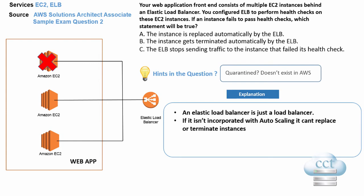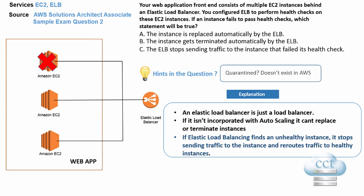So answer A — the instance is replaced automatically by the ELB — no, it can't do it unless there's Auto Scaling, and they do not mention Auto Scaling in the question. Answer B — the instance gets terminated automatically by the ELB — same reason. And as highlighted in the AWS documentation: if Elastic Load Balancing finds an unhealthy instance, it stops sending traffic to that instance and reroutes traffic to healthy instances.